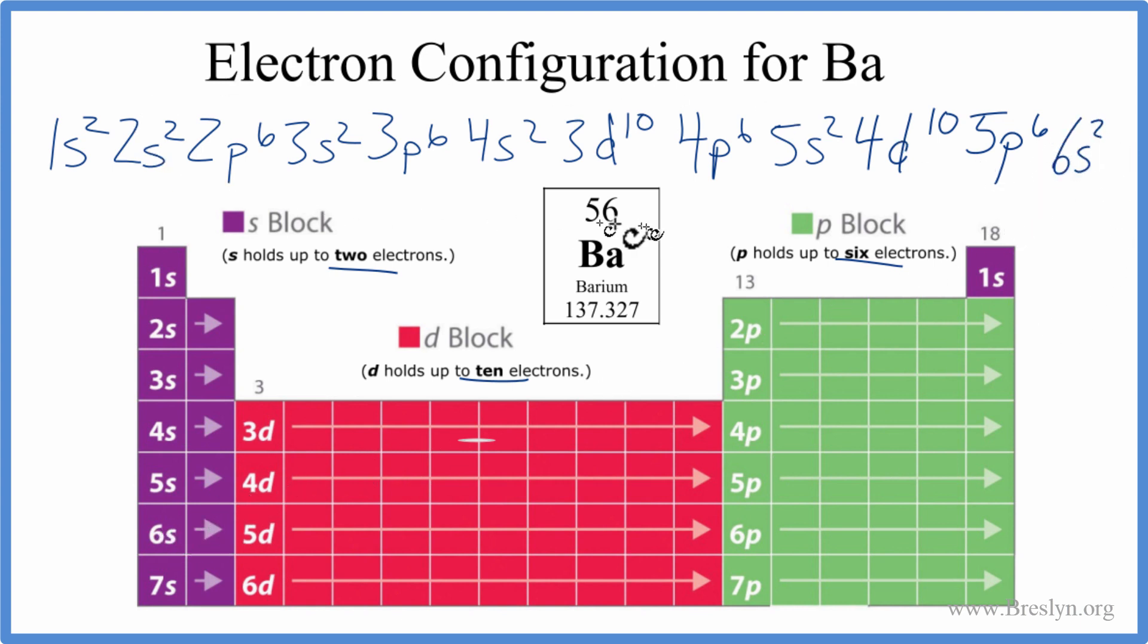And this is the electronic configuration for barium. And you can see we end in 6s2. So if we go 1, 2, 3, 4, 5, 6, here's 6s1, 6s2, and that's where you find barium on the periodic table.